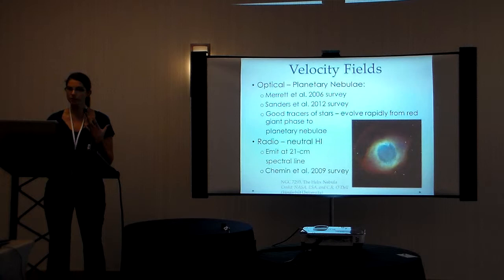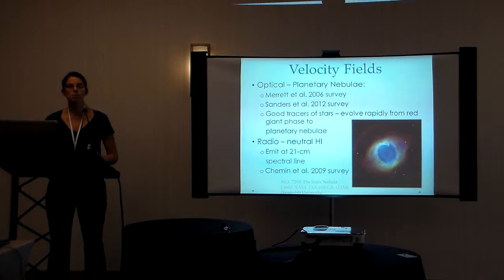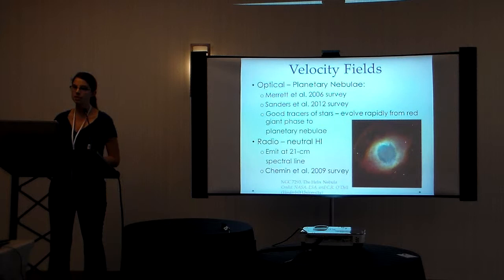So for the velocity fields that we used to derive the rotation curves for our study, we looked at planetary nebulae, which were imaged in the optical region. We combined two different surveys, the Merrett et al. 2006 survey, which contained about 3,000 objects, and the Sanders et al. 2012 survey, which contained about 600.